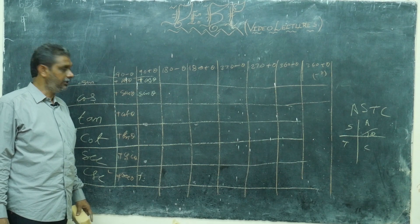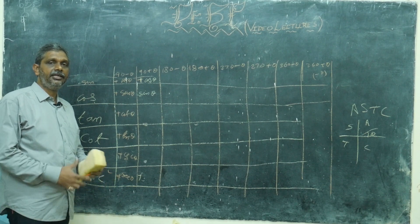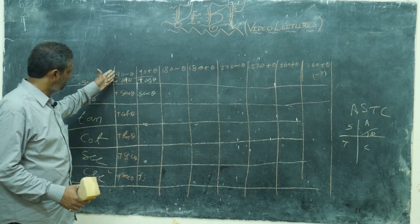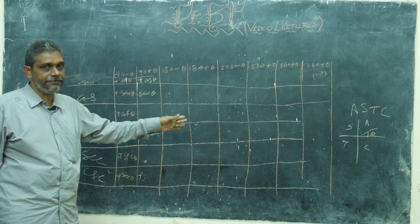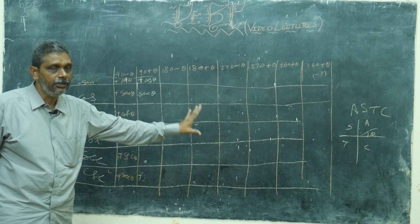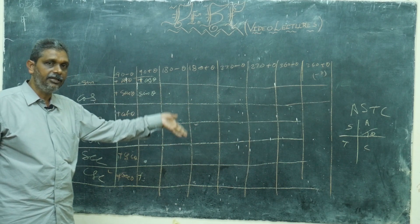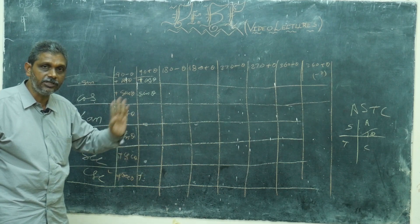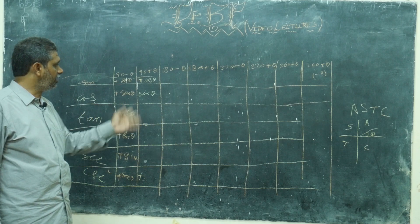Hi dear friends, this is your Dr. BP. In my previous lecture we covered up to the first quadrant. I told you to draw the diagram alone, then where it changes, what it will change, for what terms it will change, and where it falls to negative. Keep that in mind. Now we are continuing next.